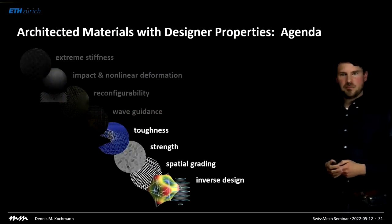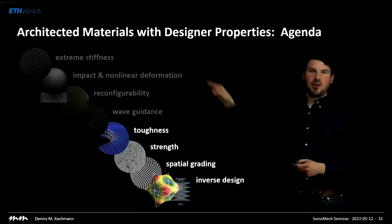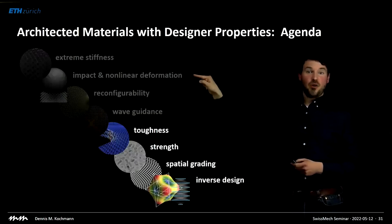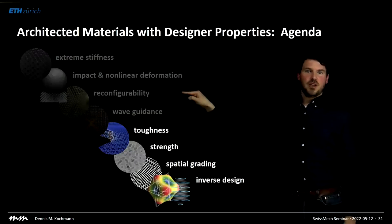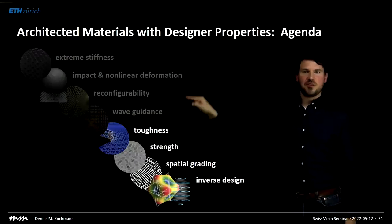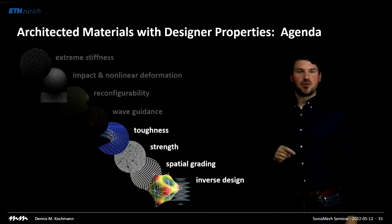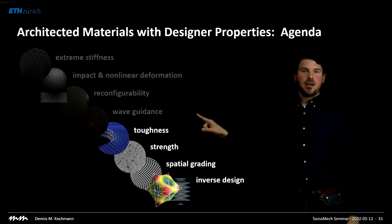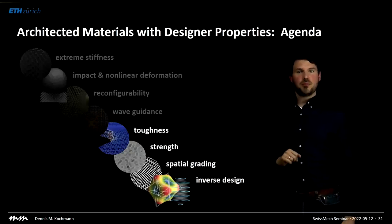Now at roughly half time: we've talked about stiffness and how extreme stiffness at low density can be achieved; nonlinear deformation and impact absorption; reconfigurable, morphing, and locomoting architected samples; and wave guidance, showing how architectures give rise to properties absent in homogeneous solids because architecture interacts with the wave. There are a few more properties and problems to touch upon.